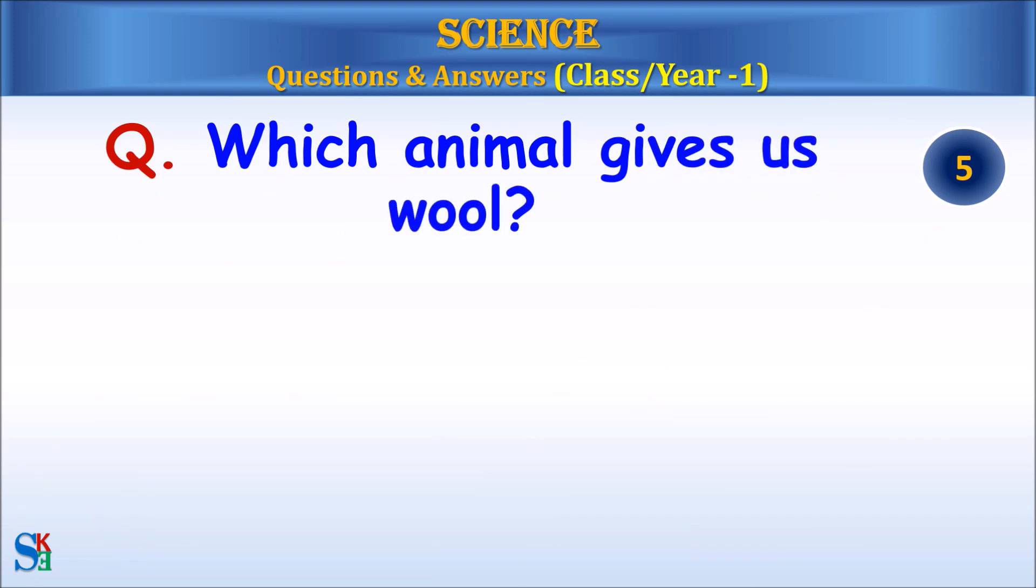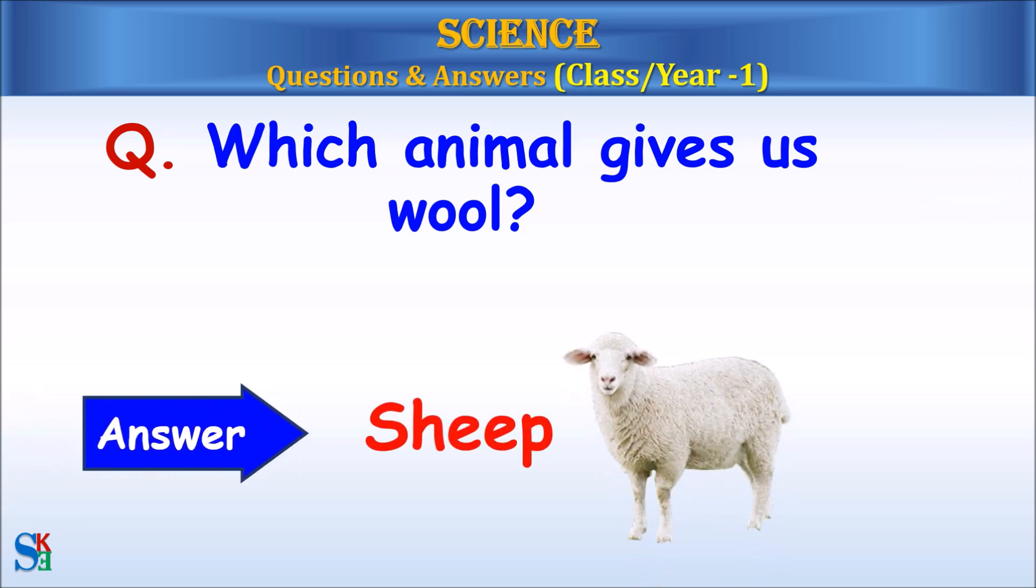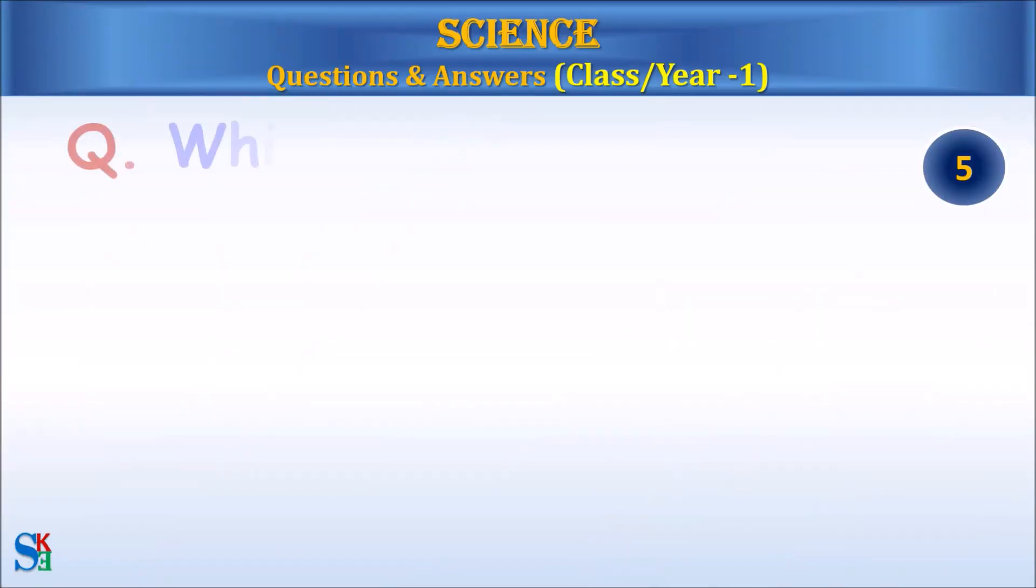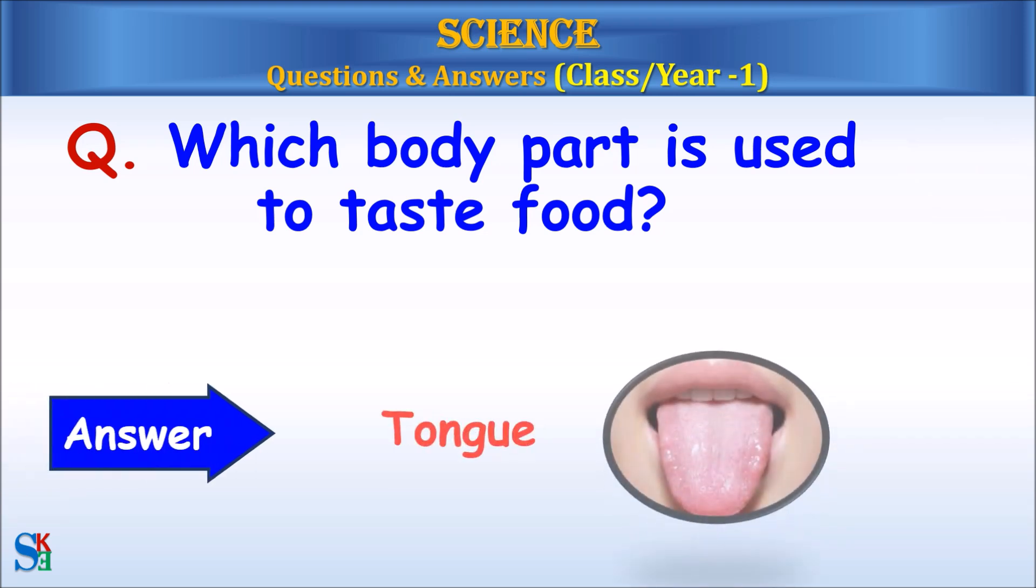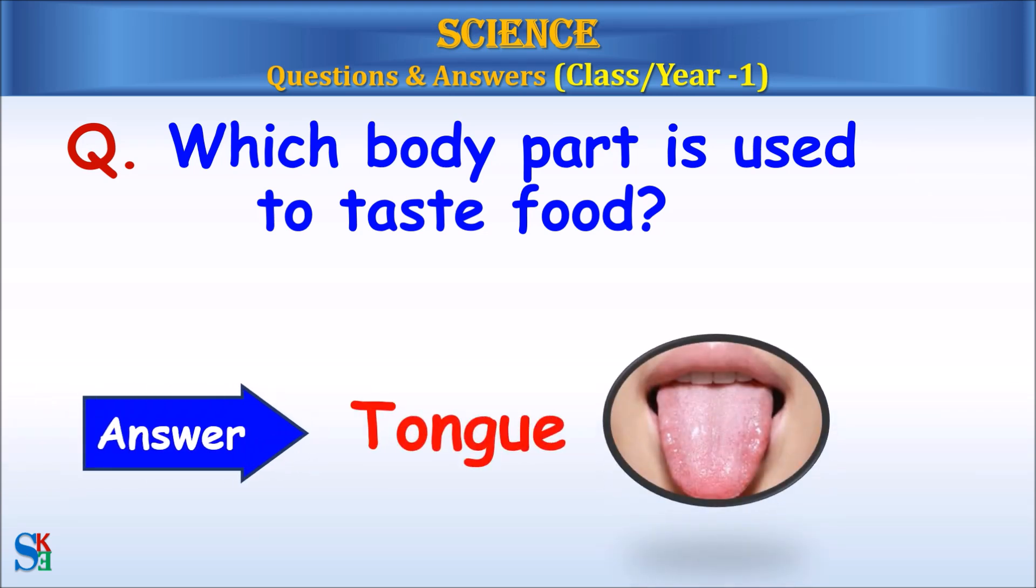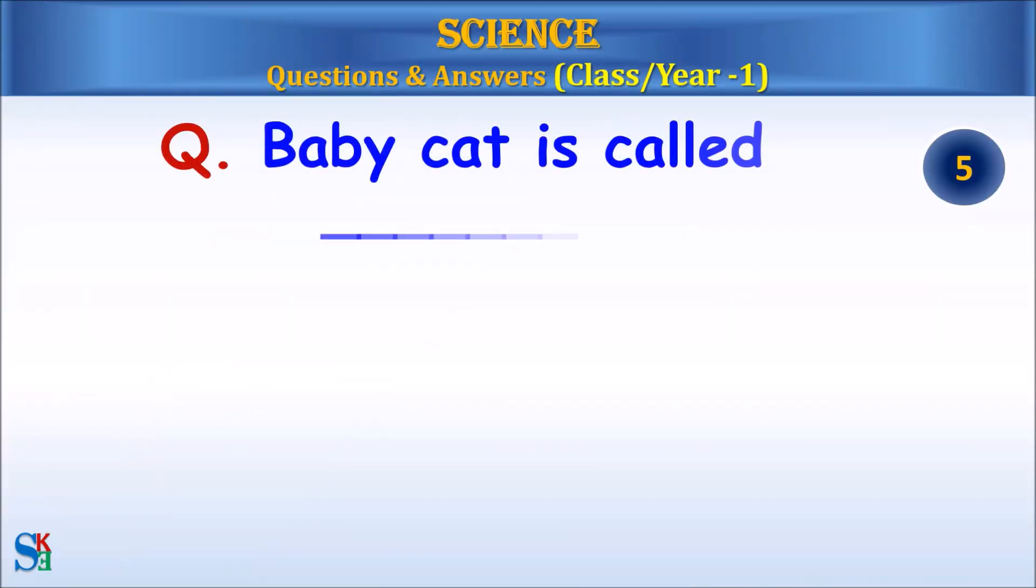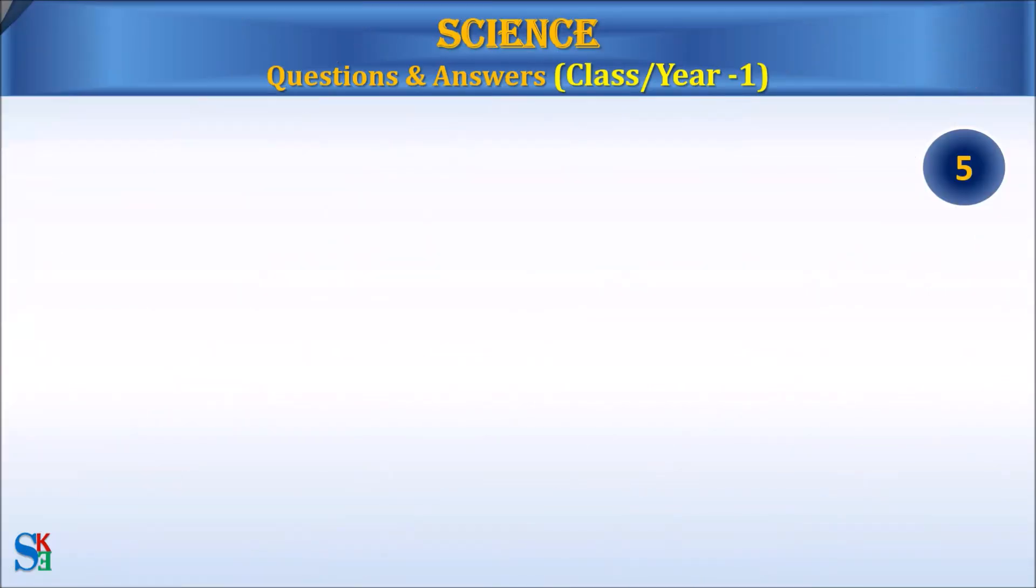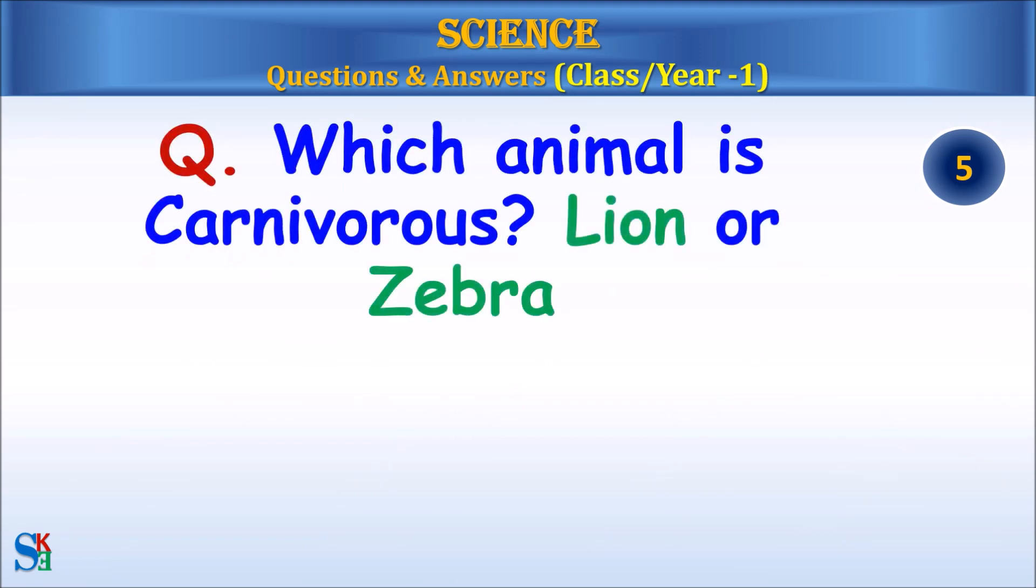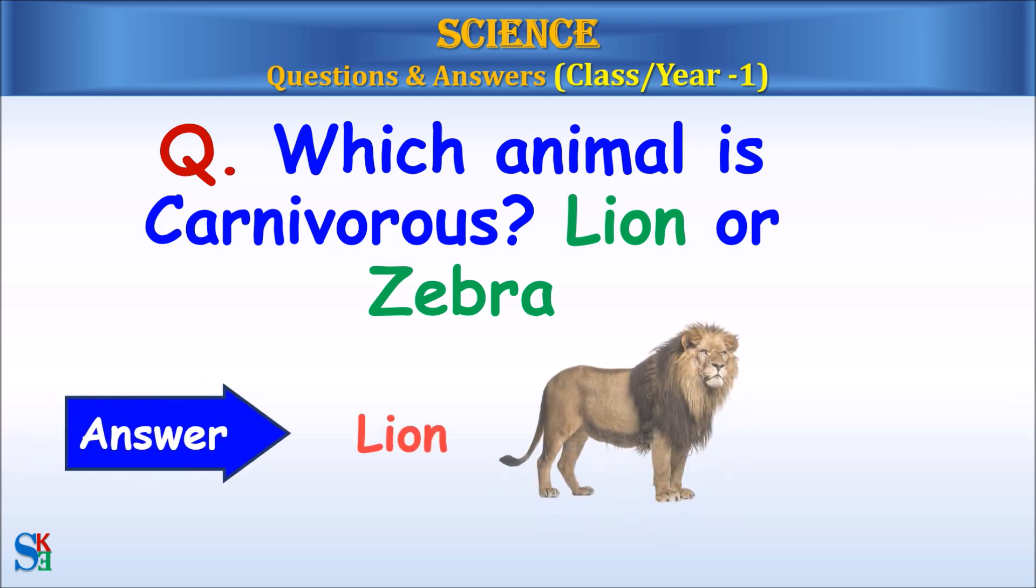Which animal gives us wool? Answer: sheep. Which body part is used to taste food? Answer: tongue. What is a baby cat called? Answer: kitten. Which animal is carnivorous, lion or zebra? Answer: lion.